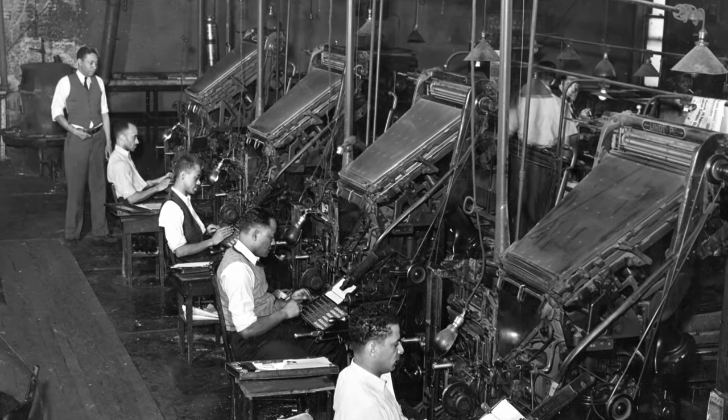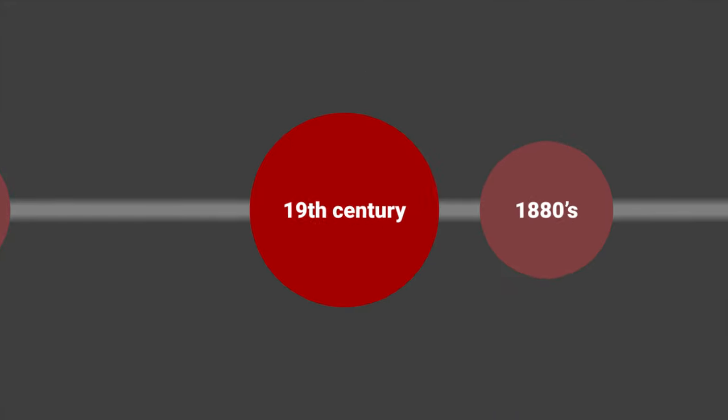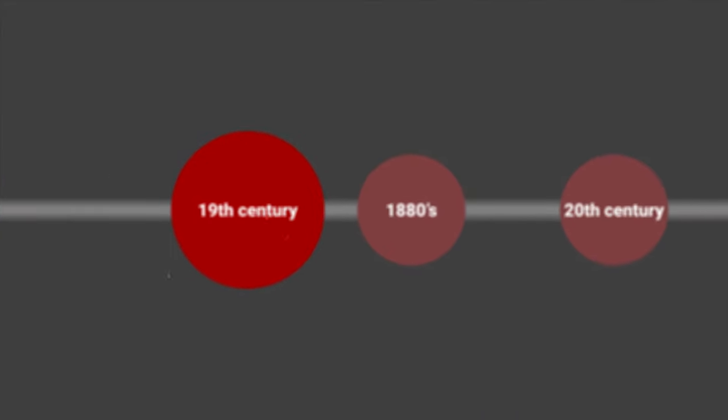In the 1880s, some of the first movement footage was captured using photographic film, being able to catch movement, if only briefly. It was the birth of a new era for visual media.